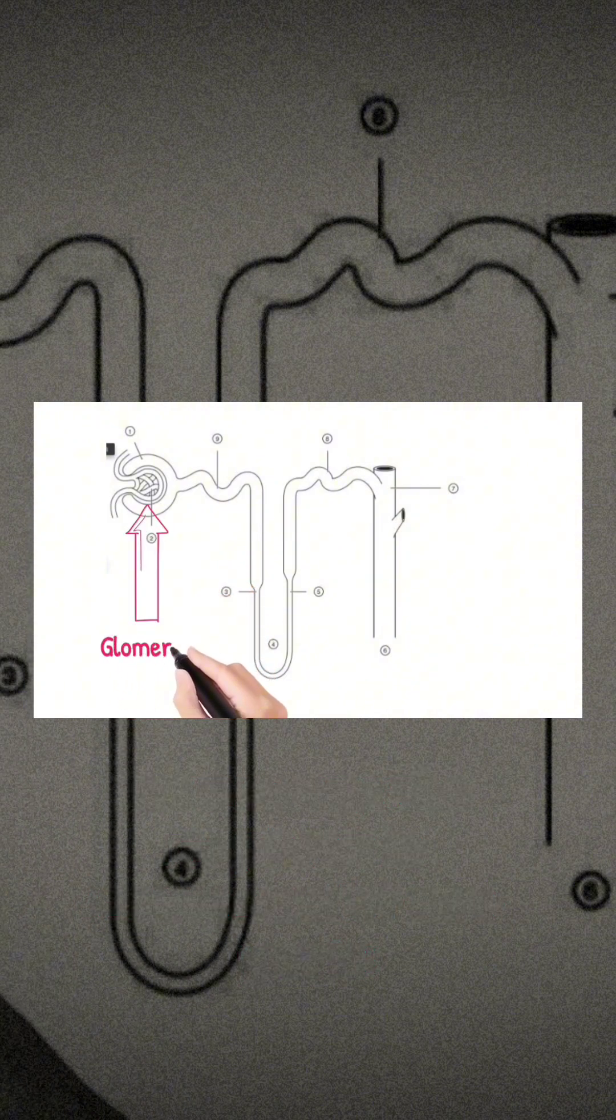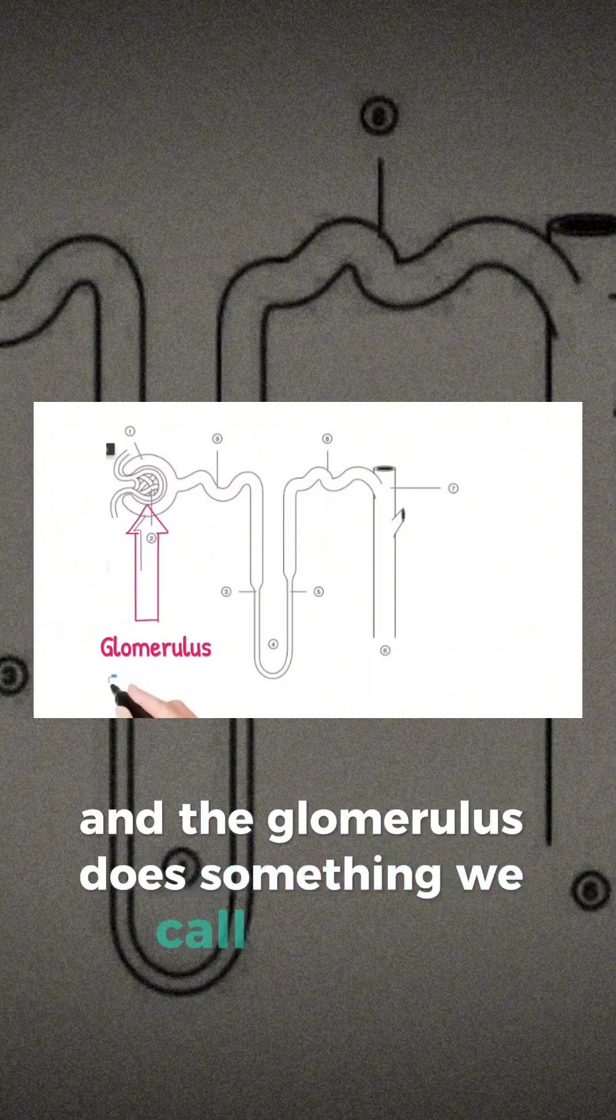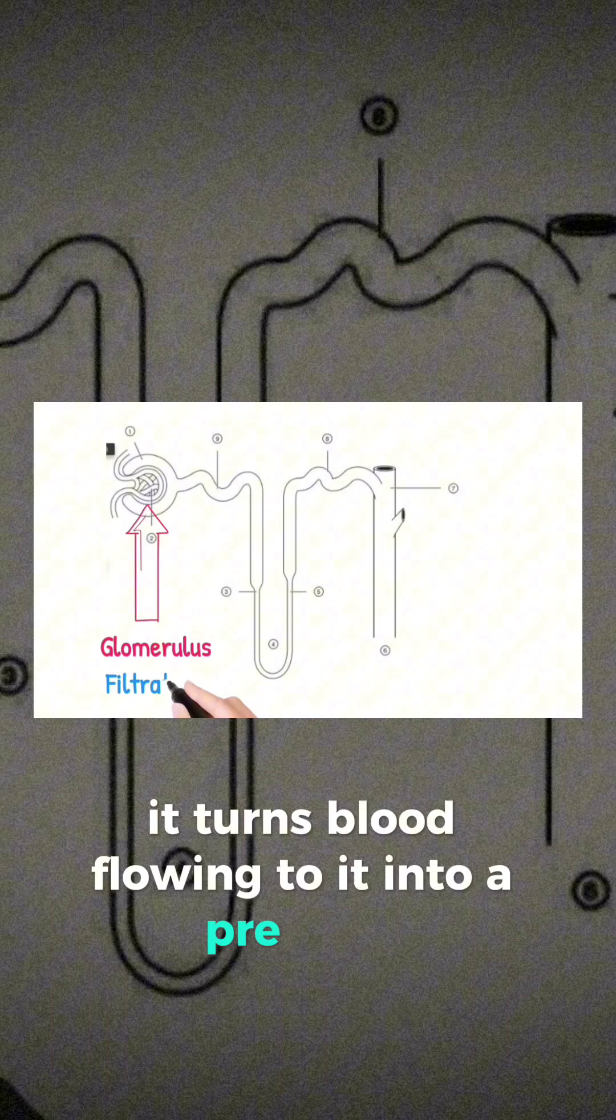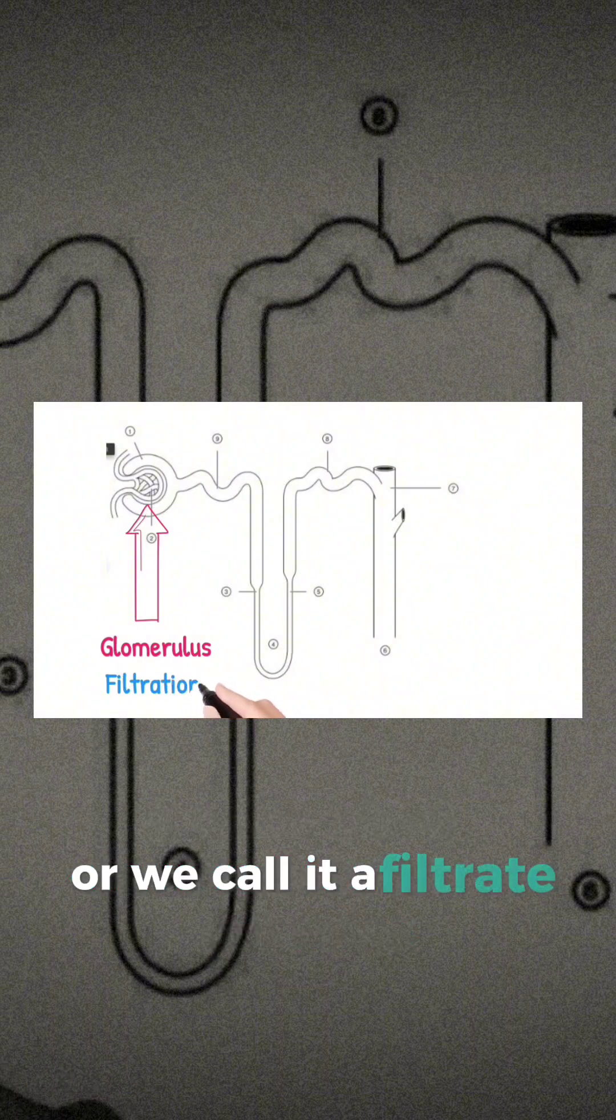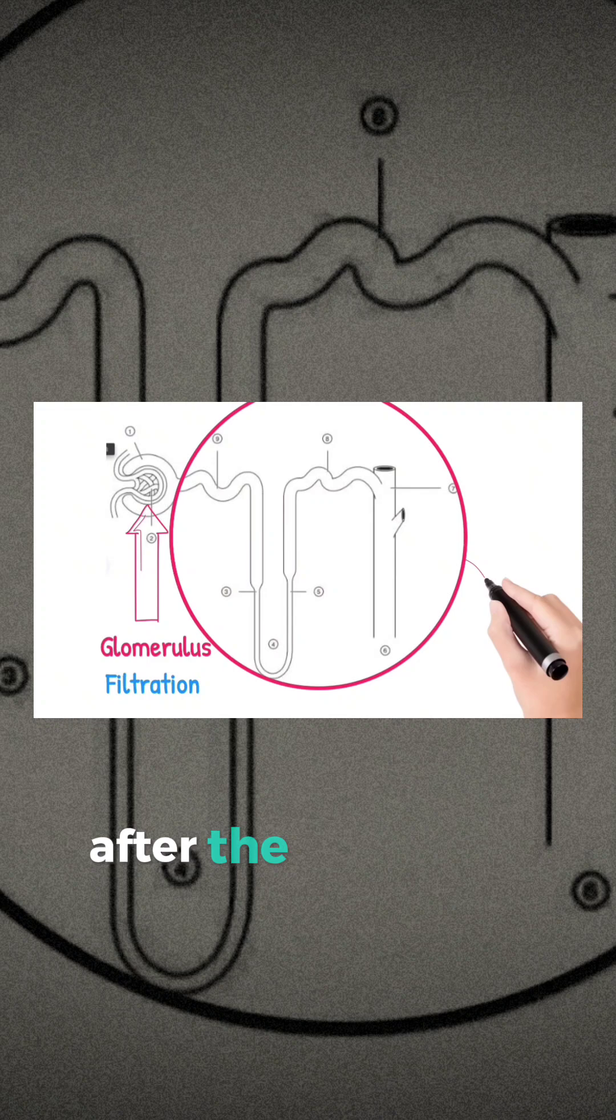two parts: the glomerulus and the tubules. The glomerulus does filtration—it turns blood flowing to it into pre-urine, which we call filtrate. The second part of the nephron is the tubular part. After the filtrate passes through the glomerulus, it reaches the tubules.